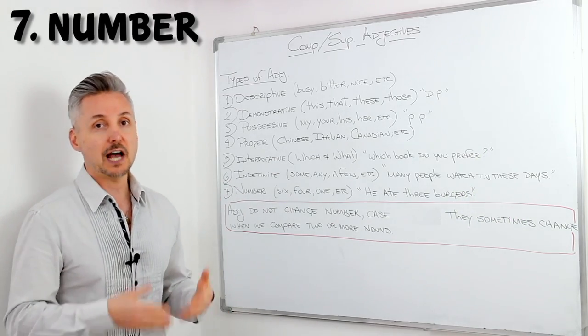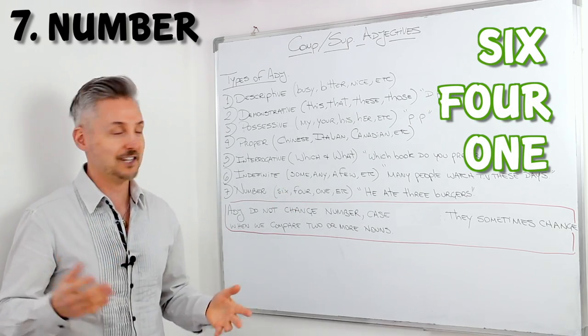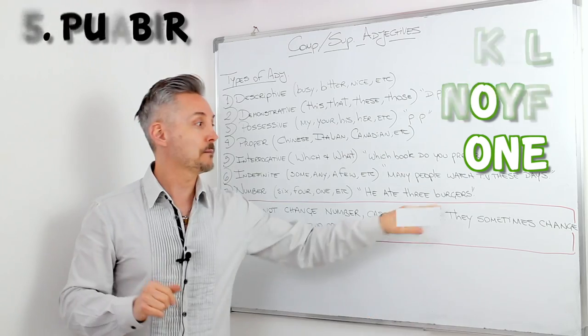And then we have number adjectives, 6, 4, 1, 11, 12, etc. He ate three burgers.